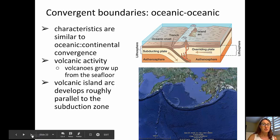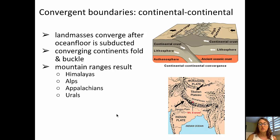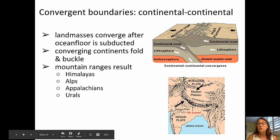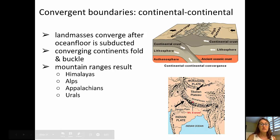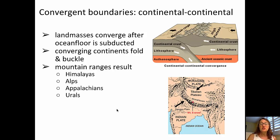The third type of convergent plate boundary is when two continental plates collide with one another. The perfect example is India colliding with Eurasia — at that collision point we see the Himalayas, a huge mountain range. As those two continental land masses collide, they simply buckle up the material between them. The Himalayas are still growing today because India is still pushing north and east relative to Eurasia. Other continental-continental collision zones include the Alps, the Appalachians, and the Urals.